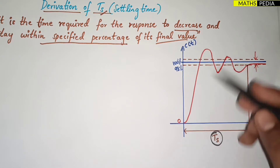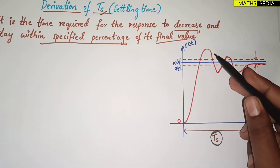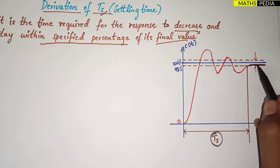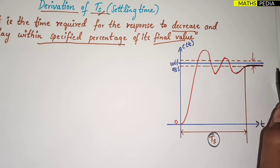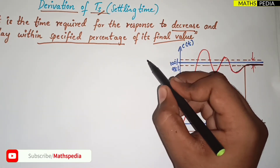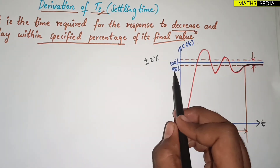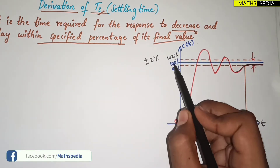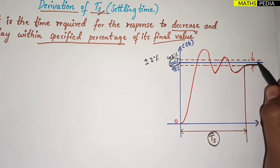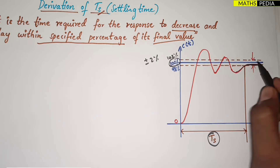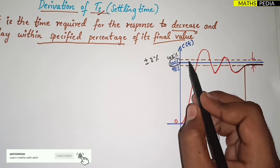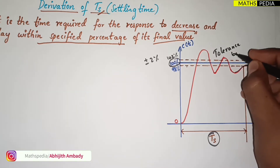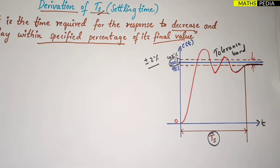On the graph, the x-axis is time and the y-axis is c(t), the response. It starts from zero, reaches a first peak overshoot, then decreases and stays within a certain tolerance band — plus or minus 2 percent, meaning between 98 percent and 102 percent of the final value. You can see the two dotted lines representing this tolerance band.